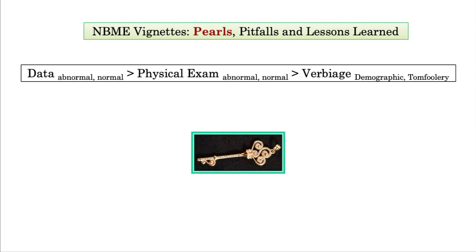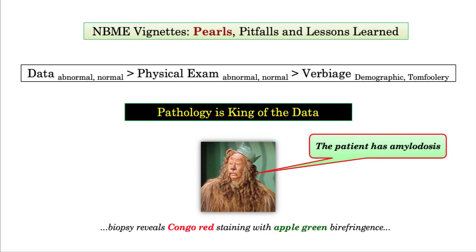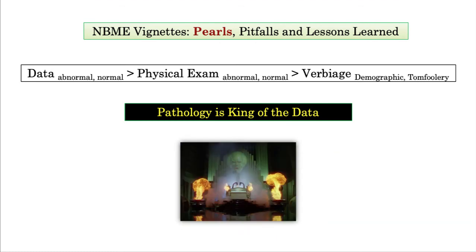And let's just add one key corollary: of all the data, pathology is king. So it doesn't matter how much data they throw at you, pay greatest attention to pathology. So when a tissue specimen is obtained, and they describe Congo red staining with apple green birefringence, stop the presses, stop the presses, the patient has amyloidosis, and everything else must revolve around that diagnosis. Misleading as the question writer might be, they can't lie about pathology.